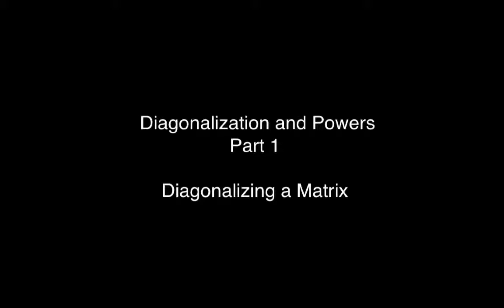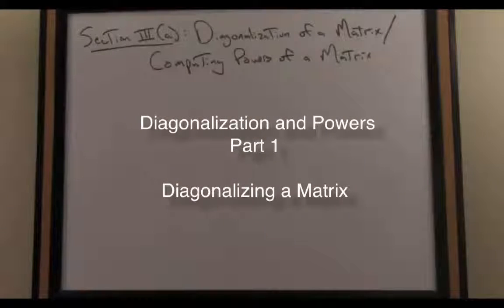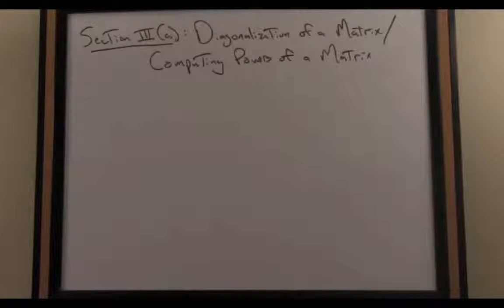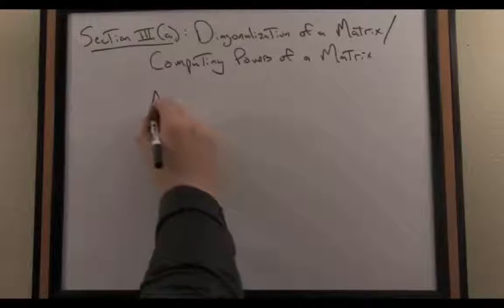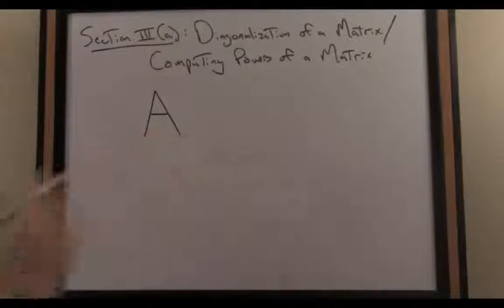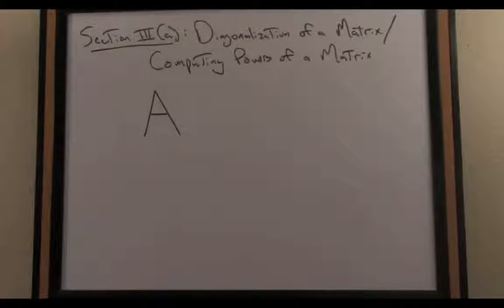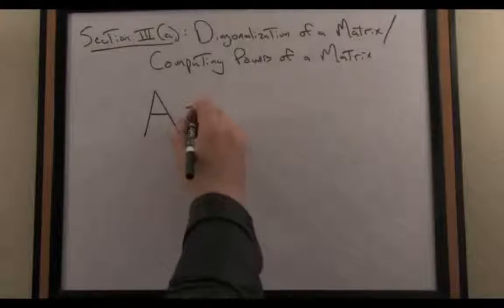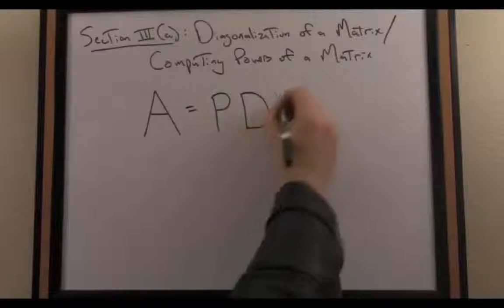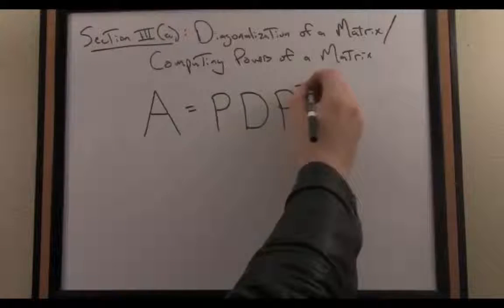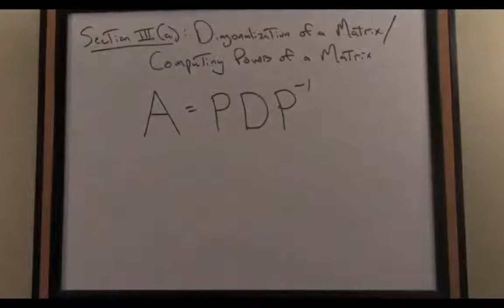The process of diagonalizing a matrix is closely related to finding the eigenvalues and eigenvectors of a given matrix. The crux of this idea is captured in the following equation. In diagonalizing a matrix A, assuming it's square n by n, we'd like to write that matrix in this particular factored form as the product of three matrices.